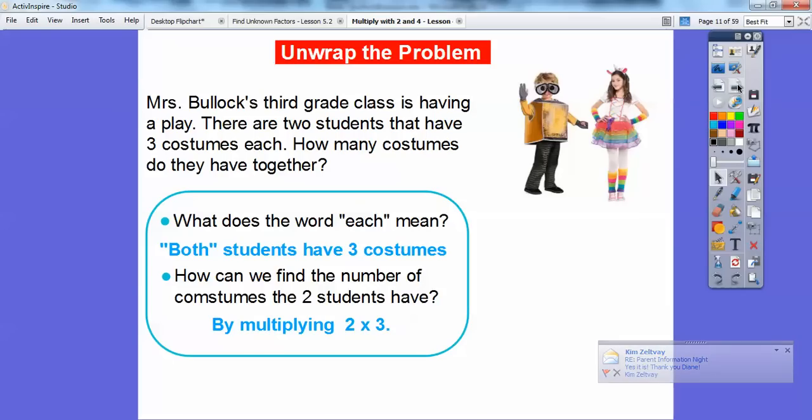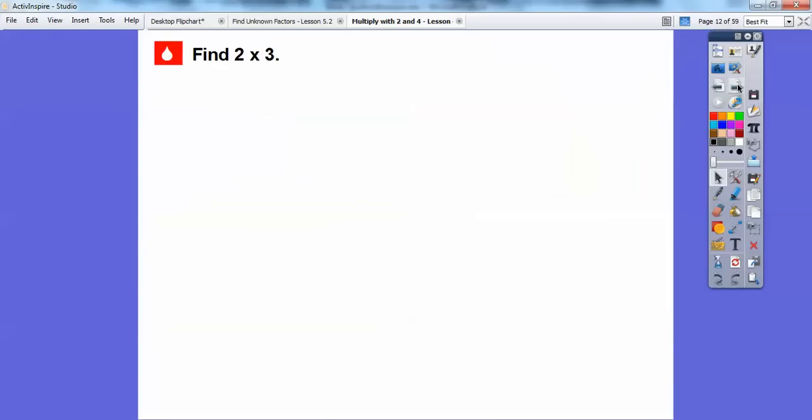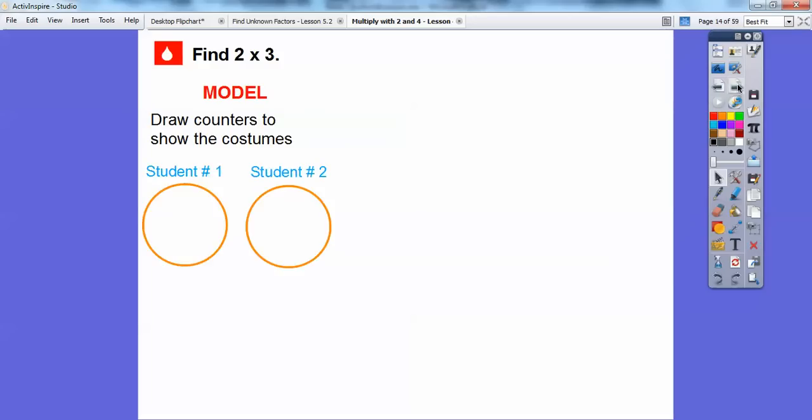Looks like I got an email from my vice principal there. I'm a high school teacher up in Sacramento. So let's see, we're going to go ahead and find 2 times 3. We're going to draw a model first and draw two counters to show the costumes. So here's two counters right here. Here's student 1 and here's student 2.